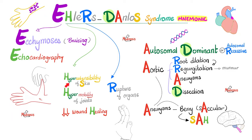Next, R stands for rupture of organs, such as the bowel or a gravid uterus, or others; and aortic root dilatation and aortic regurgitation. D stands for autosomal dominant pattern of inheritance — though it could also be autosomal recessive. A stands for autosomal dominant, aortic dilatation and regurgitation, aortic aneurysms, and aortic dissection.